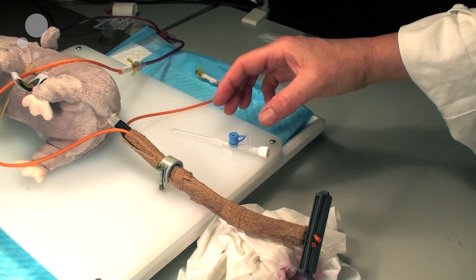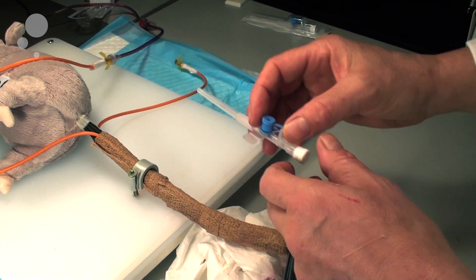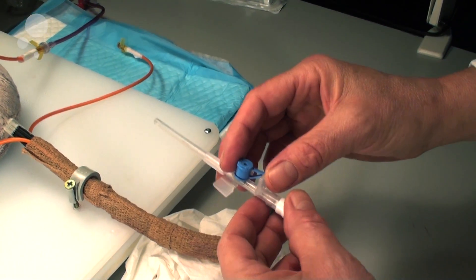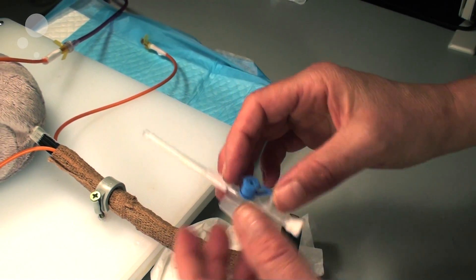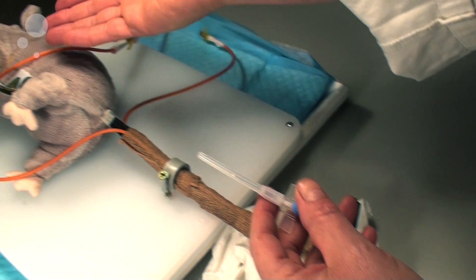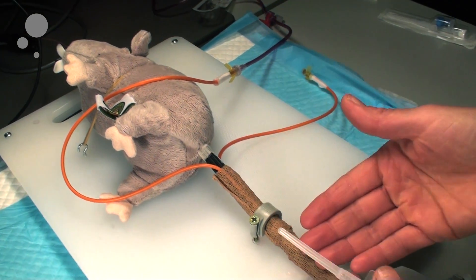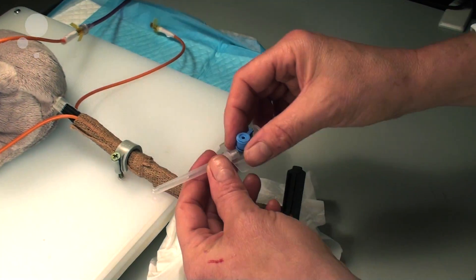Training the technique of tail vein catheterization in a rat can be done on one of the dummies. You have to ask one of the technicians to help you set up the system with the artificial blood flowing through the tail of the animal.